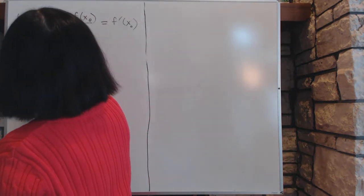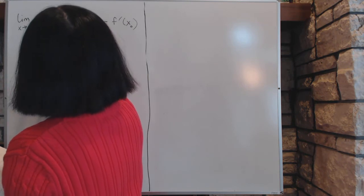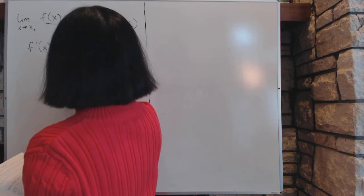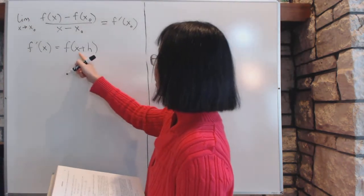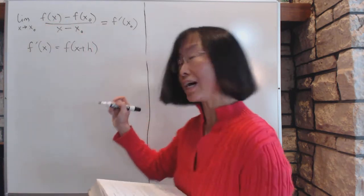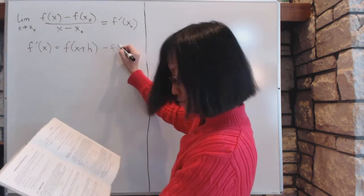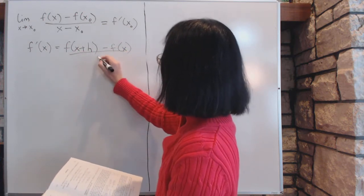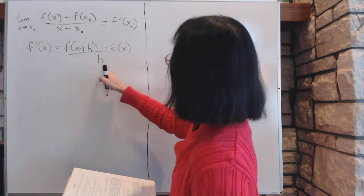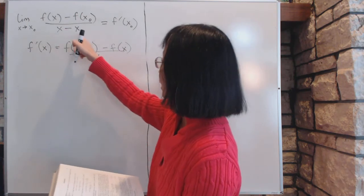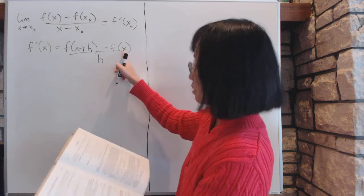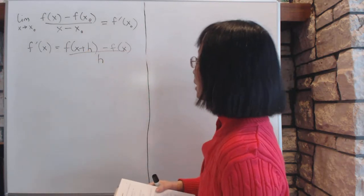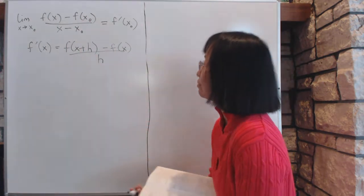That is, we can also write it as f prime of x equal to f of x plus h, h meaning the deviation. So x plus h represents the original x here, and minus f of x, and the whole thing will divide by h. So if you look at this, you can tell that h is the difference between x and x0. So then, this part becomes the x, and that part becomes the difference. These two are totally equivalent forms.